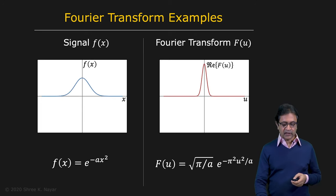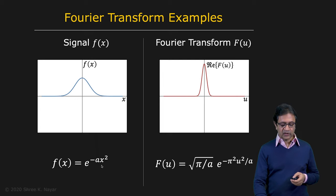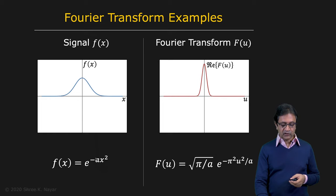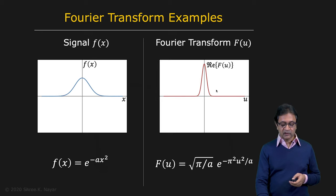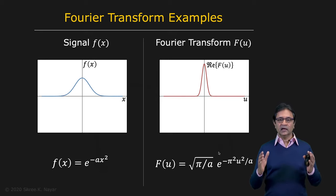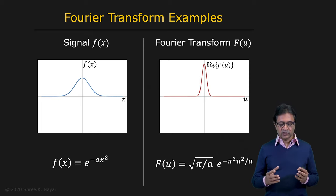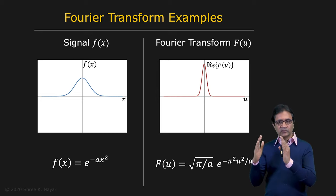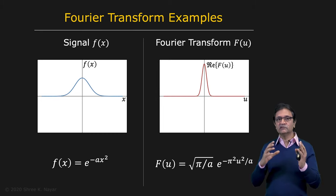As a final example, let's look at the Gaussian. Here a represents the width of the Gaussian — equivalent to σ² in the standard representation with σ as the standard deviation. The Fourier transform of a Gaussian turns out to also be a Gaussian, and its width is proportional to 1/a — it appears in the denominator. So this is an interesting observation: if you widen a function in the spatial domain, you compress it in the frequency domain, and vice versa. There is inverse scaling going on.